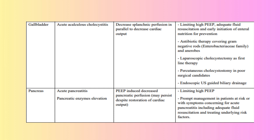Management Strategies include early enteral feeding to maintain GI motility; pharmacologic interventions such as prokinetic agents like metoclopramide, stress ulcer prophylaxis with PPIs or H2 blockers, and antibiotics for infections; volume management through fluid resuscitation to prevent splanchnic hypoperfusion; and preventive approaches such as limiting PEEP, monitoring intra-abdominal pressure, and balancing electrolyte levels to minimize complications.